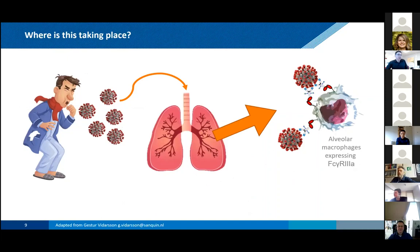Coming back to what this does — our current simplified view: people get infected, the disease manifests mainly in the lung, and we have macrophages there with the FcγR3A receptor reacting to the virus via these low-fucose antibodies. That leads to inflammatory cytokine production and promotes a bad disease course.